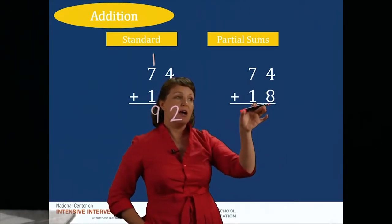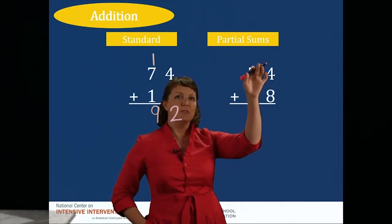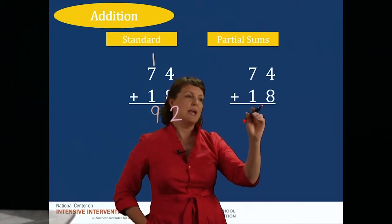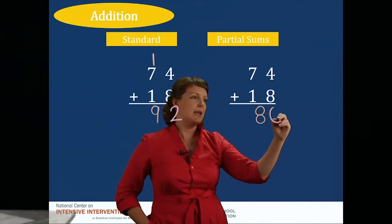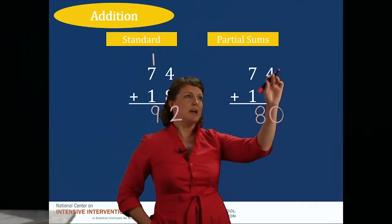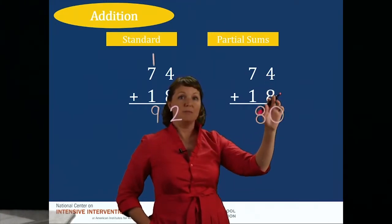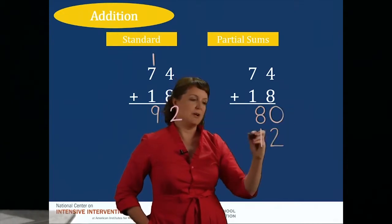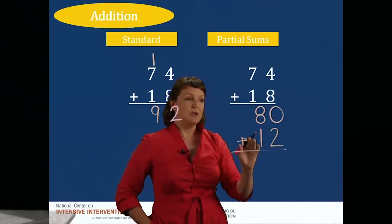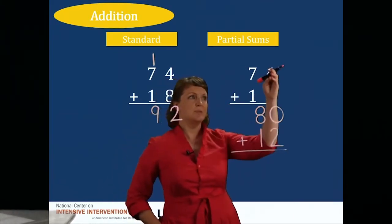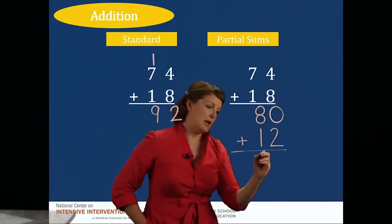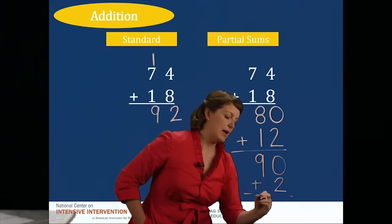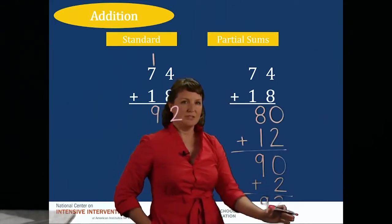With partial sums, we start in the left-hand column. Here I'm adding 7 tens plus 1 ten — that's 8 tens, or 80. Then 4 ones plus 8 ones is 12 ones. These are my partial sums. Adding them: 80 is the partial sum from the tens column, 12 is the partial sum from the ones column, giving me 9 tens and 2 ones — my answer is 92.